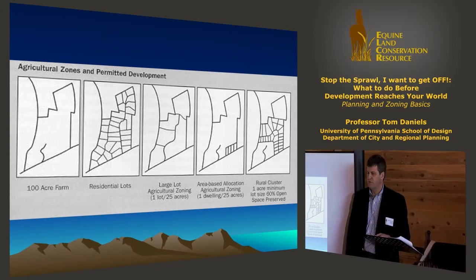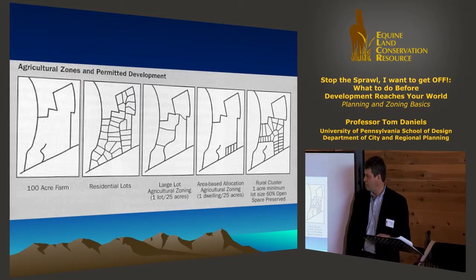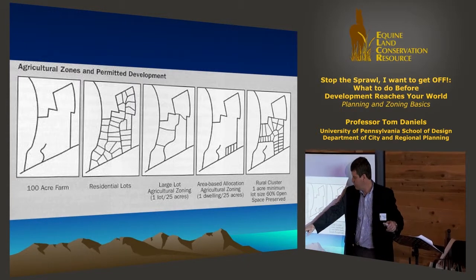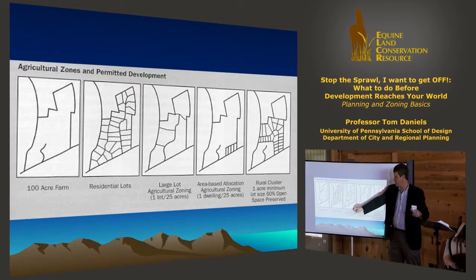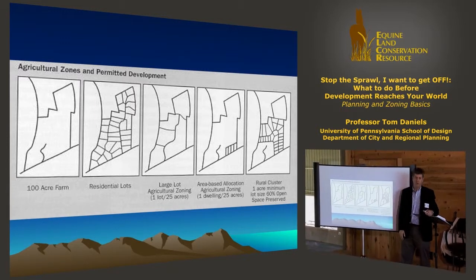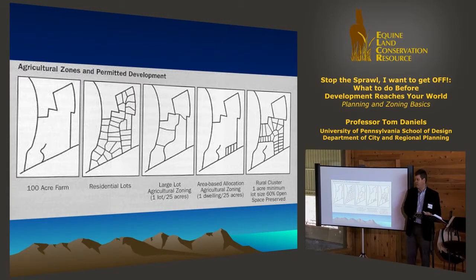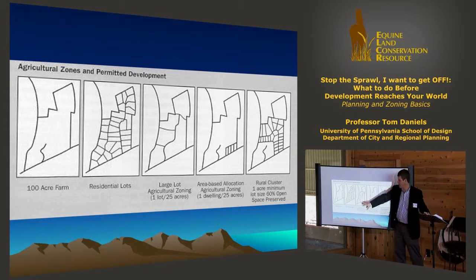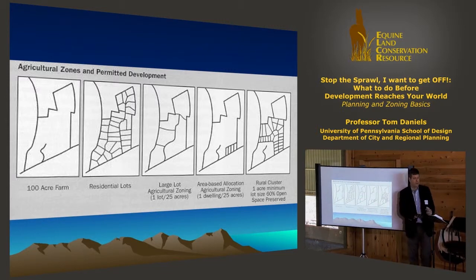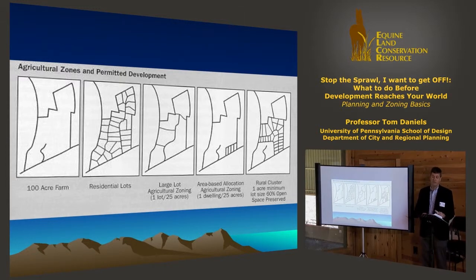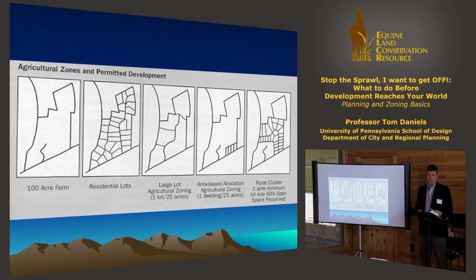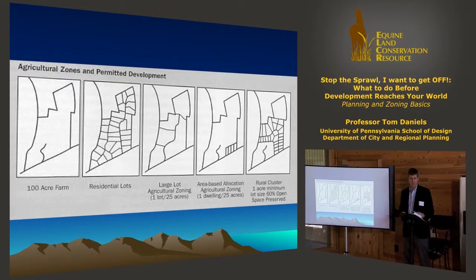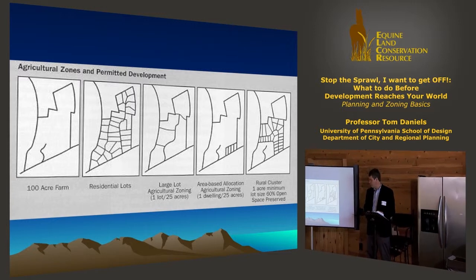You see that pattern often in the outer suburbs. Or you can have large lot zoning — one house per twenty five acres — so if you wanted to build a house you'd have to buy twenty five acres. This large minimum lot size zoning is what you tend to find in places like the Midwest, Oregon, and parts of California.